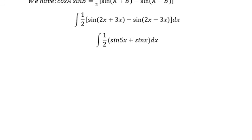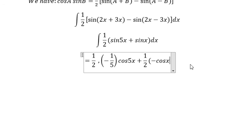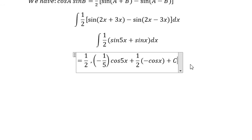Now we can get the final result. The integral of sine 5x you will get negative 1 over 5 cosine 5x. Similar for the integral of sine x is negative cosine x and we have the constant.